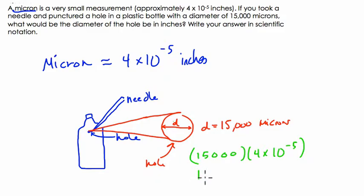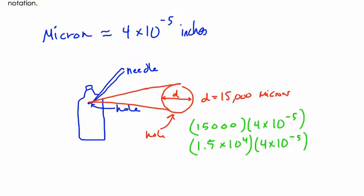So 15,000 is 1.5 times 10 to the 4th, and 4 times 10 to the negative 5th. We'll leave that in scientific notation. All we're saying here is every micron is this many inches, so if you multiply the number of microns by the number of inches that it equals, you get the total distance in inches.